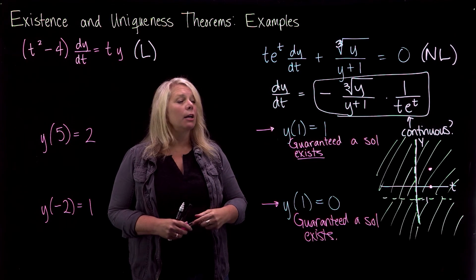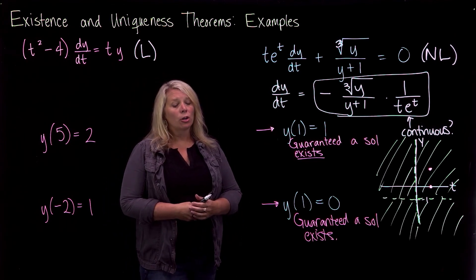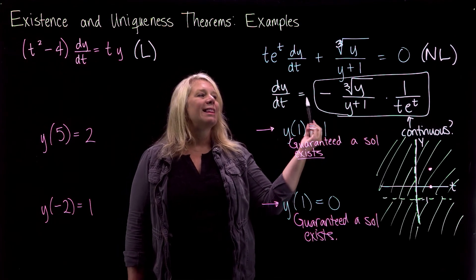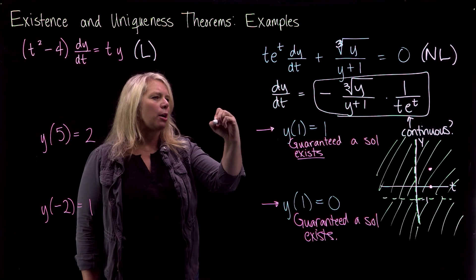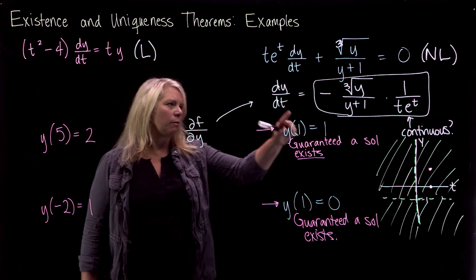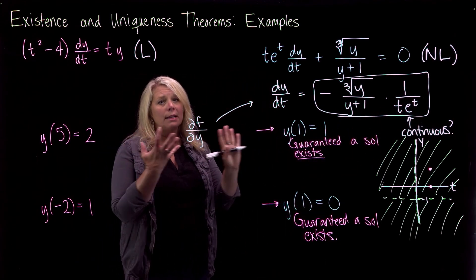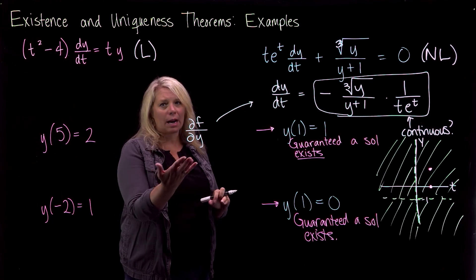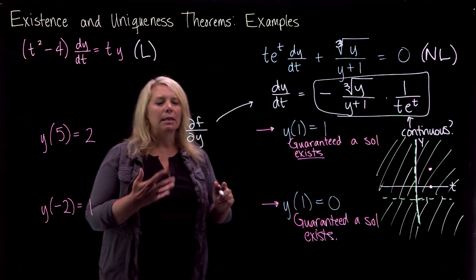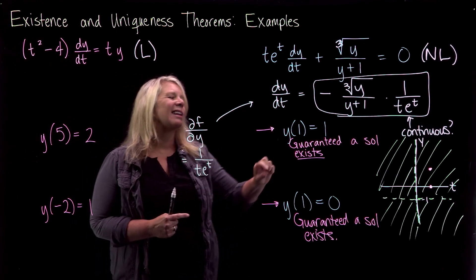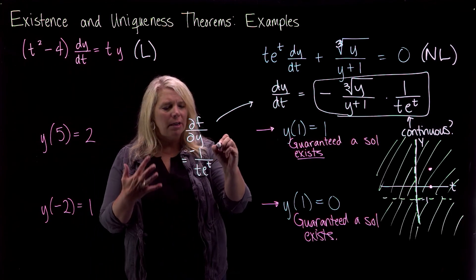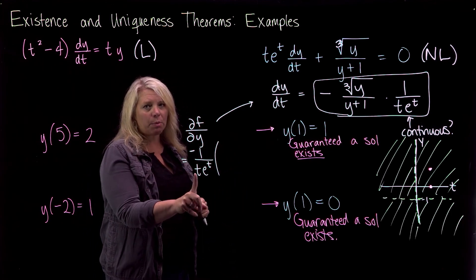For Theorem 1, to check uniqueness, remember there is something else you have to consider. In order to check uniqueness, you need to look at the partial derivative of this function with respect to the dependent variable y. So I need to find ∂f/∂y, where f is the right-hand side. The reason I pulled the t and y parts apart was so I could find this partial derivative easily. If I'm differentiating with respect to y, all of the factor involving t is treated as a constant, so that part comes out front, and then I'll need to use the quotient rule.